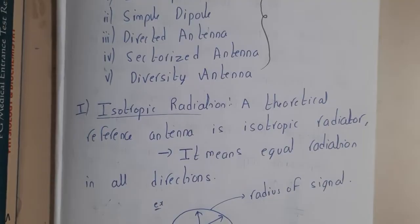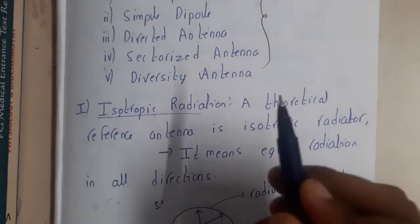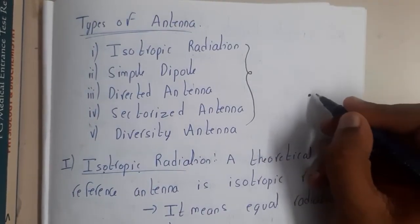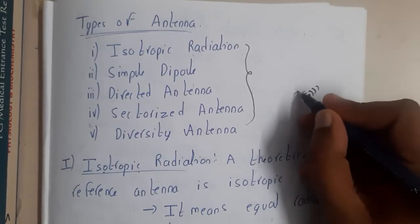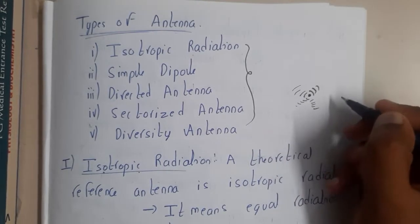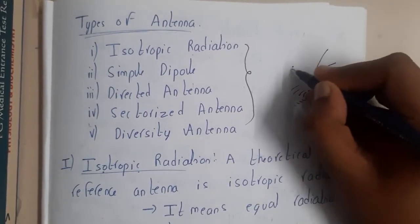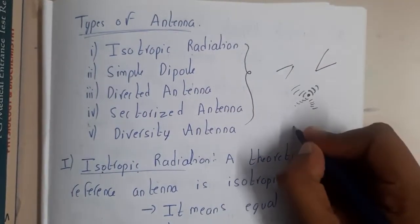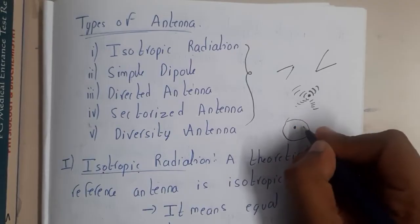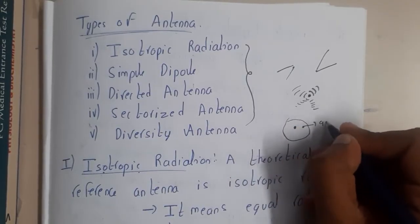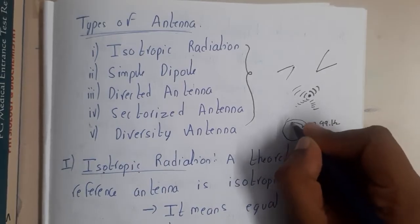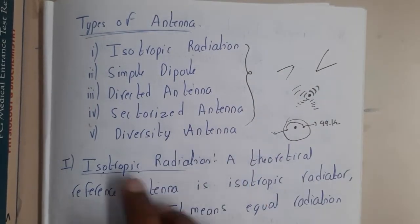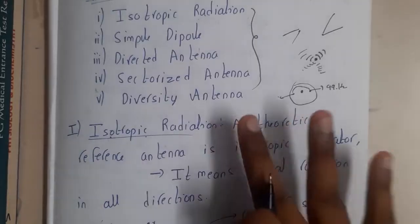The first type is the isotropic radiator. This is a kind of antenna which transmits the signal in all directions. There is no fixed direction — it transmits in all directions with the same energy level. So if the signal strength is 99 Hz at one position, from all sides it will also be 99 Hz. That is the isotropic radiator.